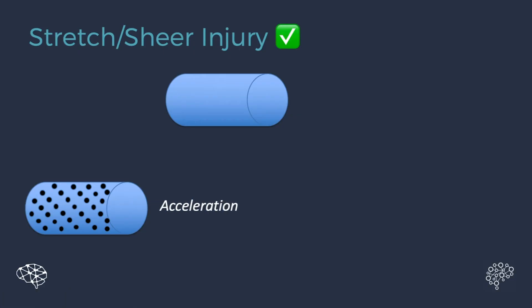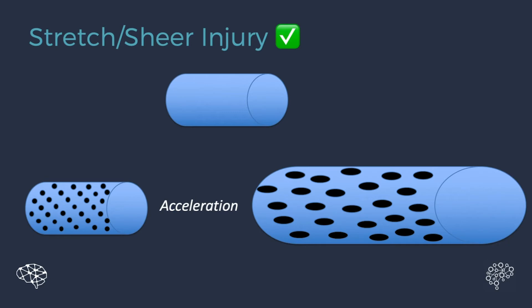But when you get an acceleration or deceleration, you actually get a stretching where these holes become elongated. And with that, you get potassium going out of the cell and sodium and calcium coming into the cell.